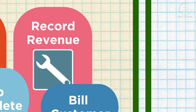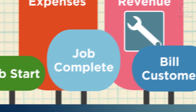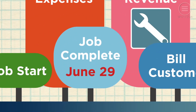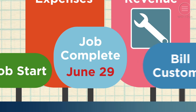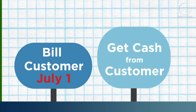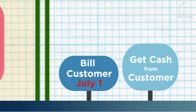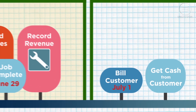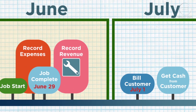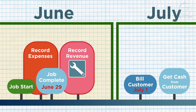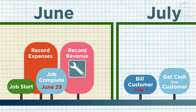Adjusting entries allow you to do that. Let's say your landscaping company completed a job on June 29th but didn't bill a customer until July 1st. According to the matching principle and accrual accounting, you still need to record your expenses and revenue in June.